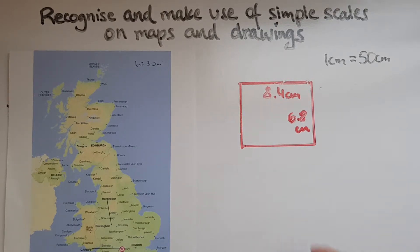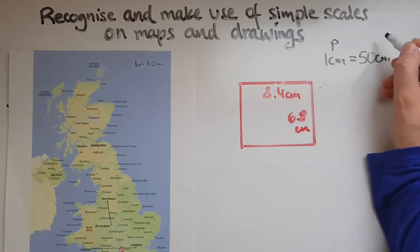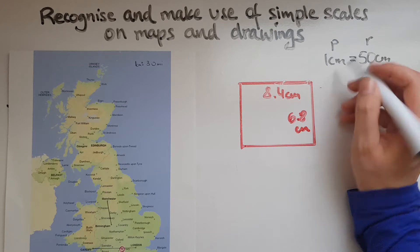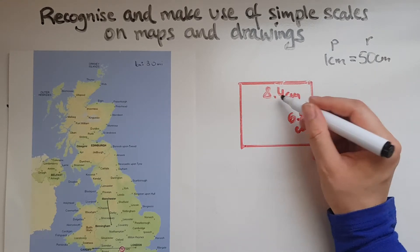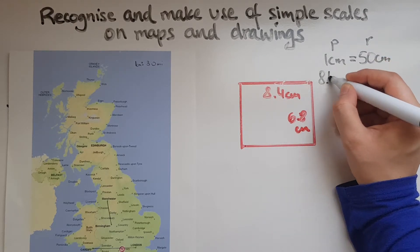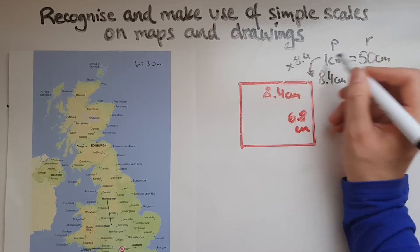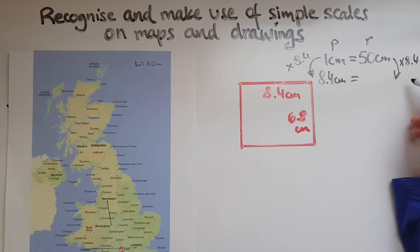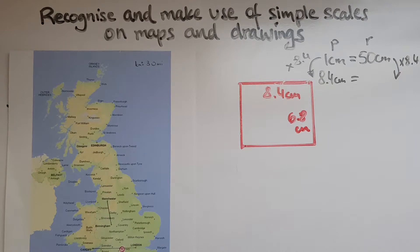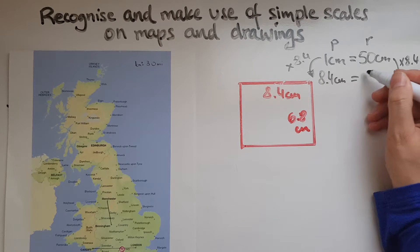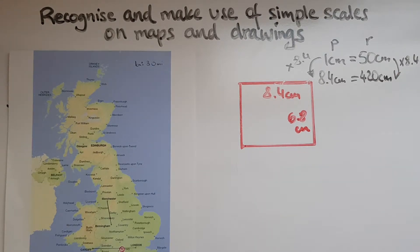Let's work out the length. On the plan it's 8.4 centimetres. To get from 1 to 8.4 we multiply by 8.4, so we do the same to 50: 8.4 multiplied by 50 gives us 420 centimetres. So the room is 420 centimetres long in real life.